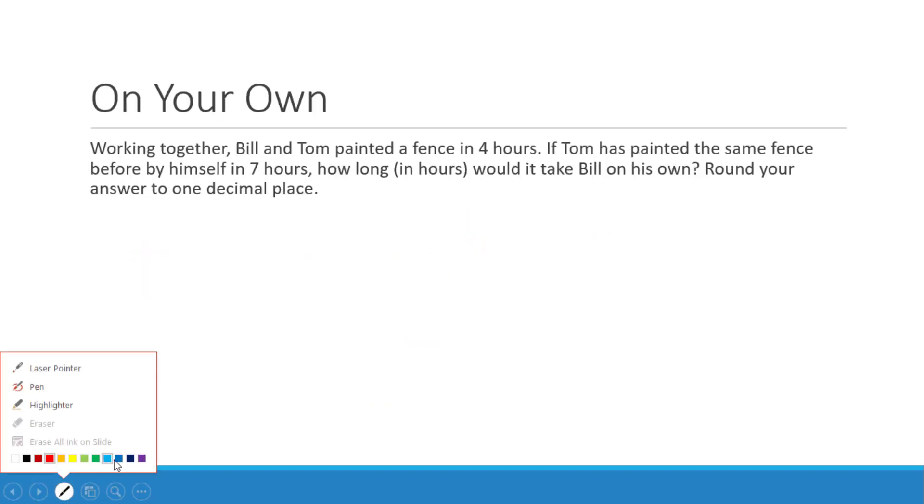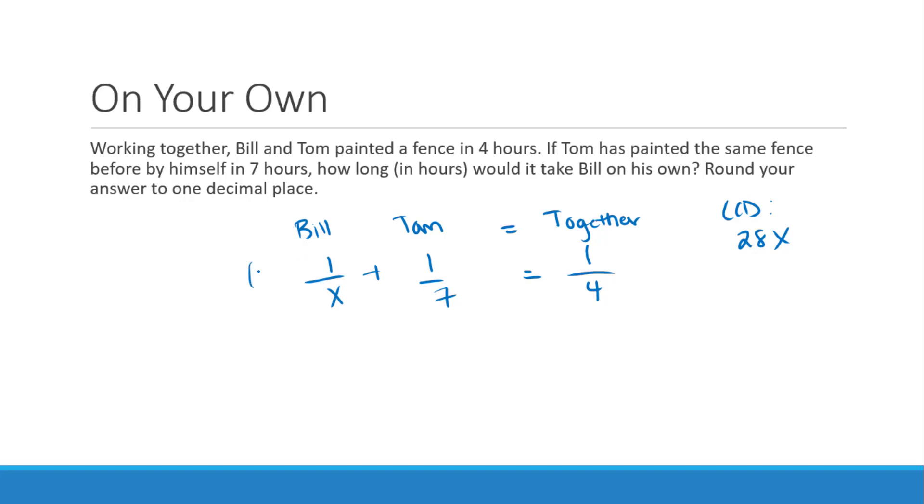All right, and lastly, try this problem on your own. When you're ready, hit play to check your answer. So this would involve two people, Bill, Tom, and then what happens when they work together. So that's what we set it equal to. So it says working together, they painted the fence in four hours. So we know together is going to be equal to 1 fourth. Tom has painted the same fence before by himself in seven hours, so Tom is going to be 1 seventh. We are looking for Bill, so he's going to be 1 over x. So what we need to do is come up with that LCD. So between 7 and 4, that would be 28. And then we can't forget about x as well. So we're going to multiply each fraction by 28x. So we're going to cancel here, which is just going to leave me 28. We're going to cancel there, which 28 divided by 7 is 4, so this is going to be 4x, is equal to, this is going to be 7x. So we're going to move the 4x over.